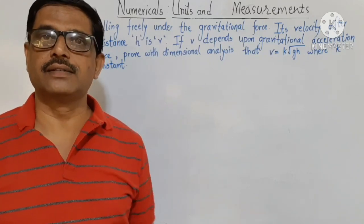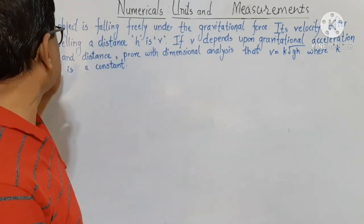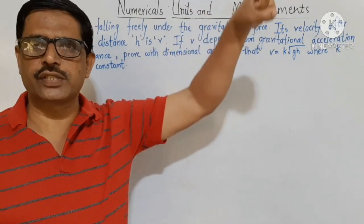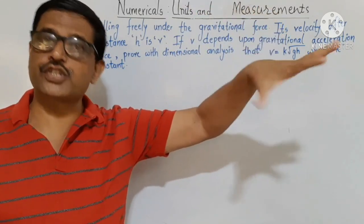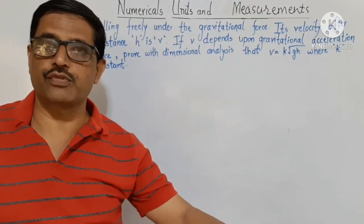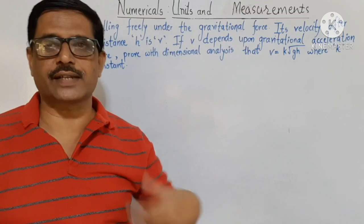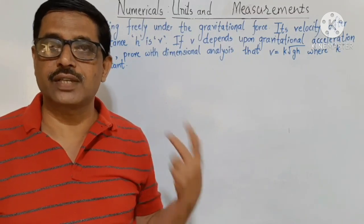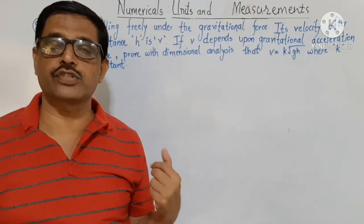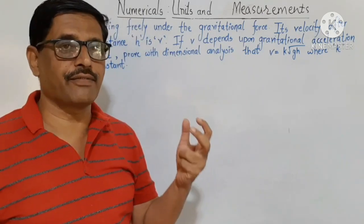An object released from a height comes down due to gravitational force. The gravitational force gives acceleration to the body, and because of that the body comes down with increasing velocity.